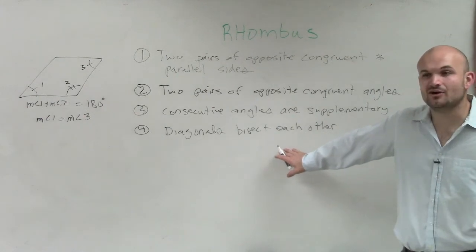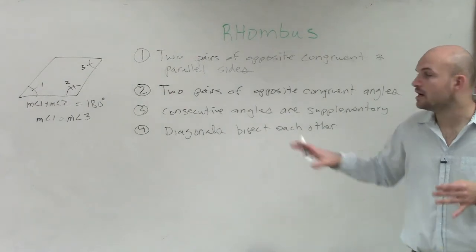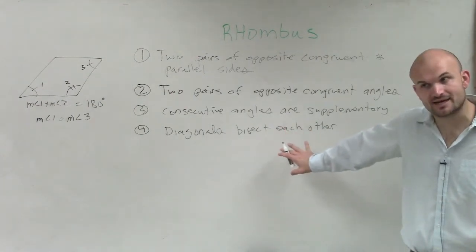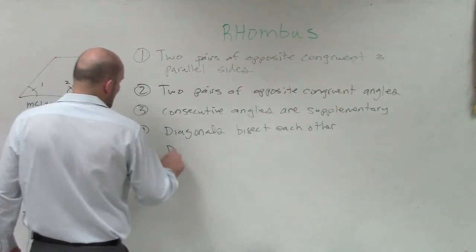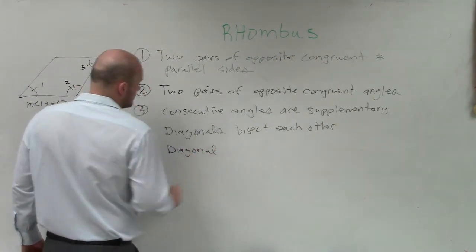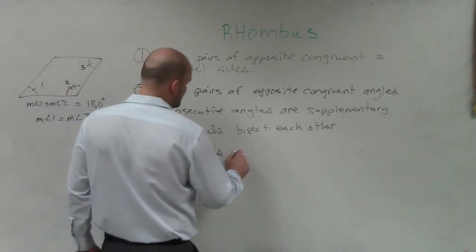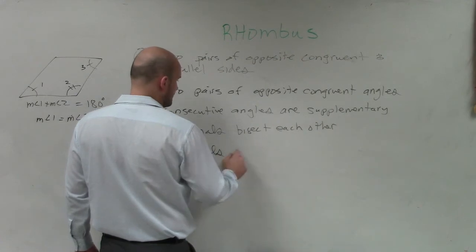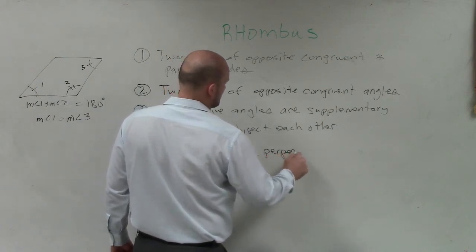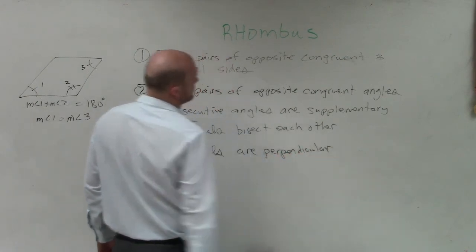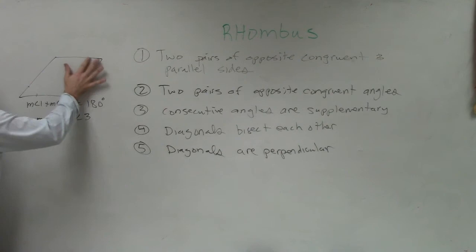Now, remember in a rectangle, guys, do you remember how we said that the diagonals were equal in measurement? A rhombus, that's not always the case. That's only true for your rectangles. For a rhombus, though, there is something that's special. For a rhombus, the diagonals are perpendicular. So the diagonals are perpendicular. So what does that mean again? That means they create a 90-degree angle.